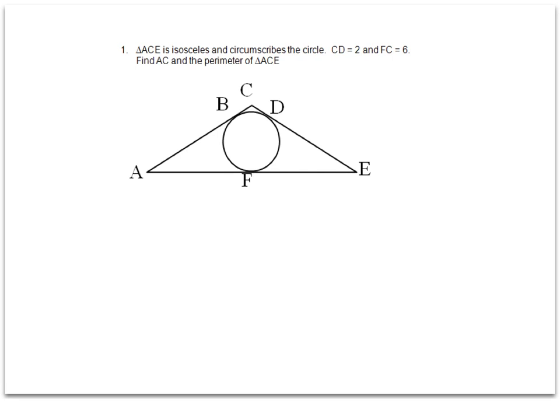In the last video of section 10.5 on tangents, we're given a diagram and we're told that triangle ACE is isosceles and it circumscribes the circle.